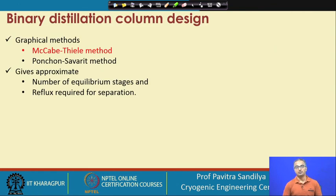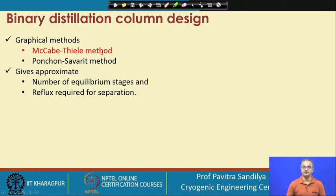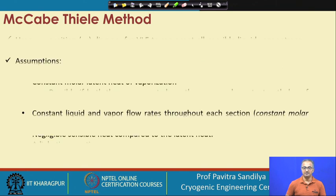We shall concentrate on binary distillation column design. There are various other methods for multi-component systems which are not under the purview of this course, but the binary approach can still be used for multi-component systems with some modifications. There are two common methods: the McCabe-Thiele method and the Ponchon-Savarit method. We shall look into the McCabe-Thiele method, which is the easier of the two. From this design we shall obtain the approximate number of equilibrium stages and the reflux ratio required for the separation.